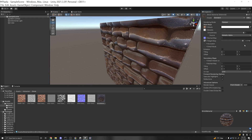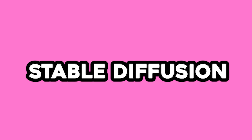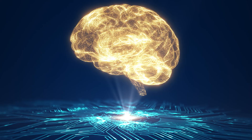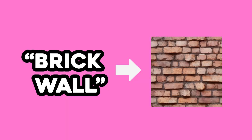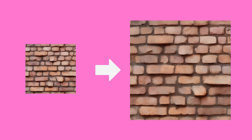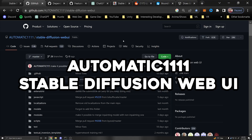Today I'm going to show you how to generate a texture using Stable Diffusion, which is the new AI algorithm that converts your text into an image. With this we can create seamless textures and also upscale them right within the tool.